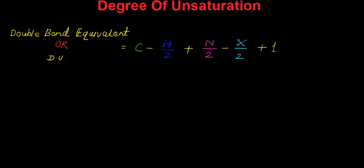Nuclear magnetic resonance spectroscopic techniques and so on. But with the help of this mathematical equation, one can find out how many double bonds, triple bonds, and rings are present in an organic compound. The double bond equivalent or degree of unsaturation equals C minus H/2 plus N/2 minus X/2 plus 1.